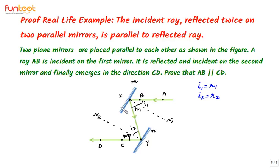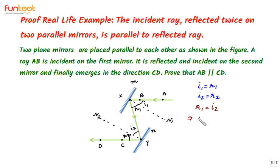Since mirrors M and N are parallel to each other, their normals N1 and N2 will also be parallel to each other. Since N1 is parallel to N2 and XY acts as the transversal, R1 and I2 are alternate angles, which means R1 equals I2. Now we have R1 equals I2, I1 equals R1, and I2 equals R2. This implies I1 equals R1 equals I2 equals R2 — all are equal. So we can easily establish that I1 plus R1 equals I2 plus R2, and since these are alternate angles, AB is parallel to CD.